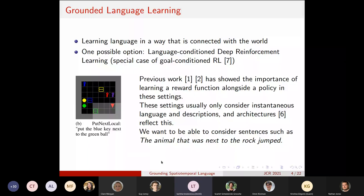Such as 'the animal that was next to the rock jumped.' So here, the temporal aspect comes because jumping is an action that is performed over time. And to decide if something jumped, if an animal jumped, you have to look at its evolution over time. And notice also that we refer to a particular object with its spatial relationship to another object in the past, and this relationship may no longer be true in the present.